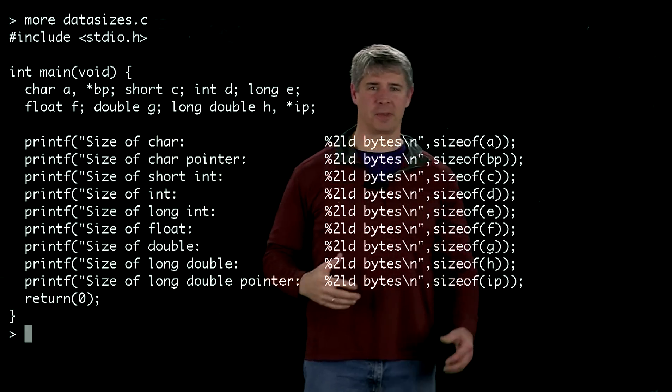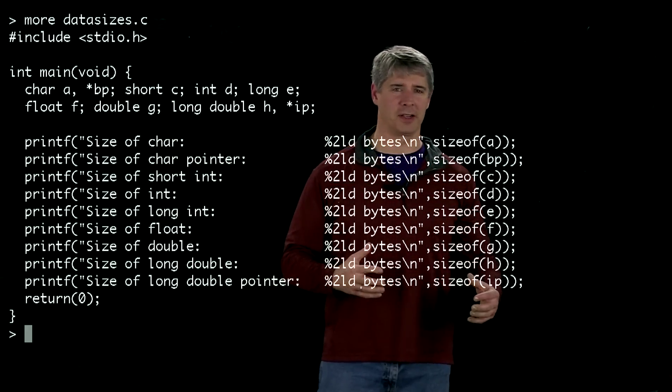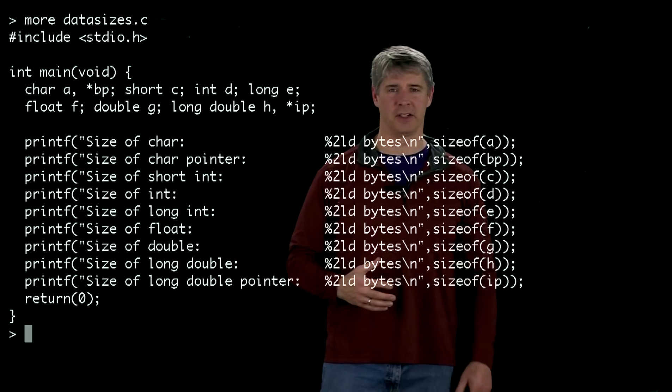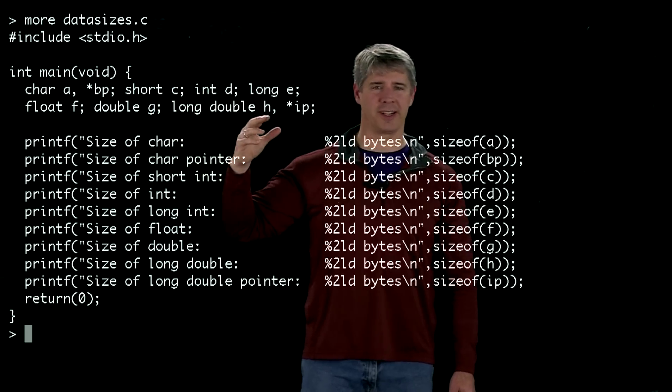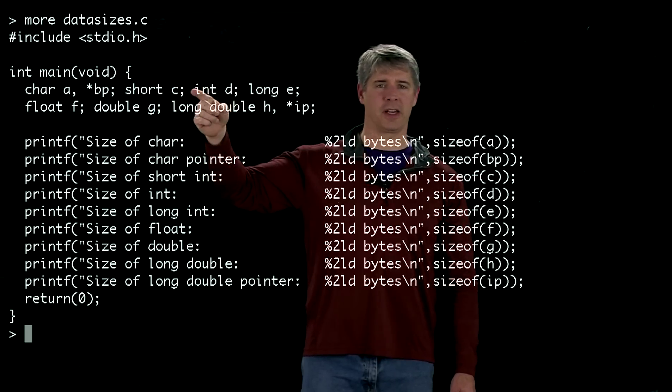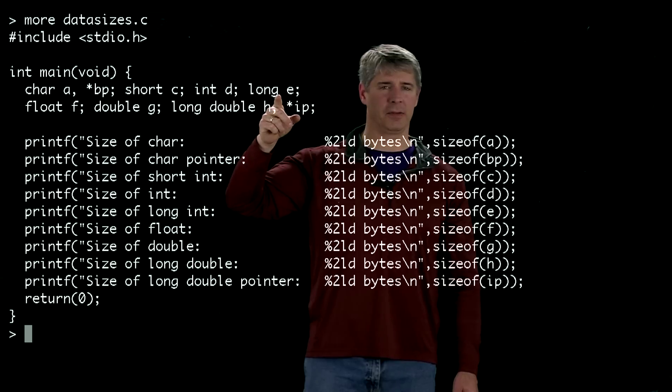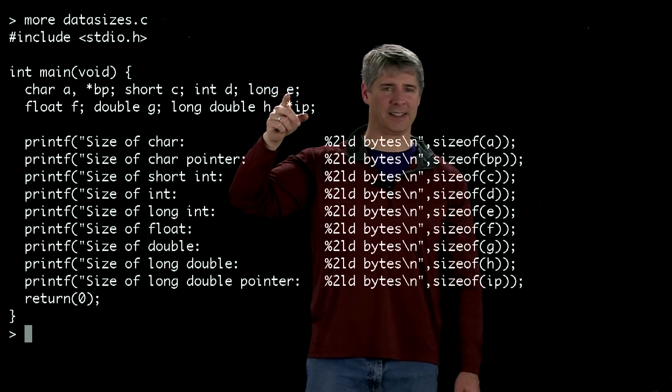So short can be something just like long, but now short can use fewer bytes than a standard integer to represent an integer. And short here, short c is equivalent to saying short int c. We've also got an integer d, we've got a long integer e, which is equivalent to saying long int e.